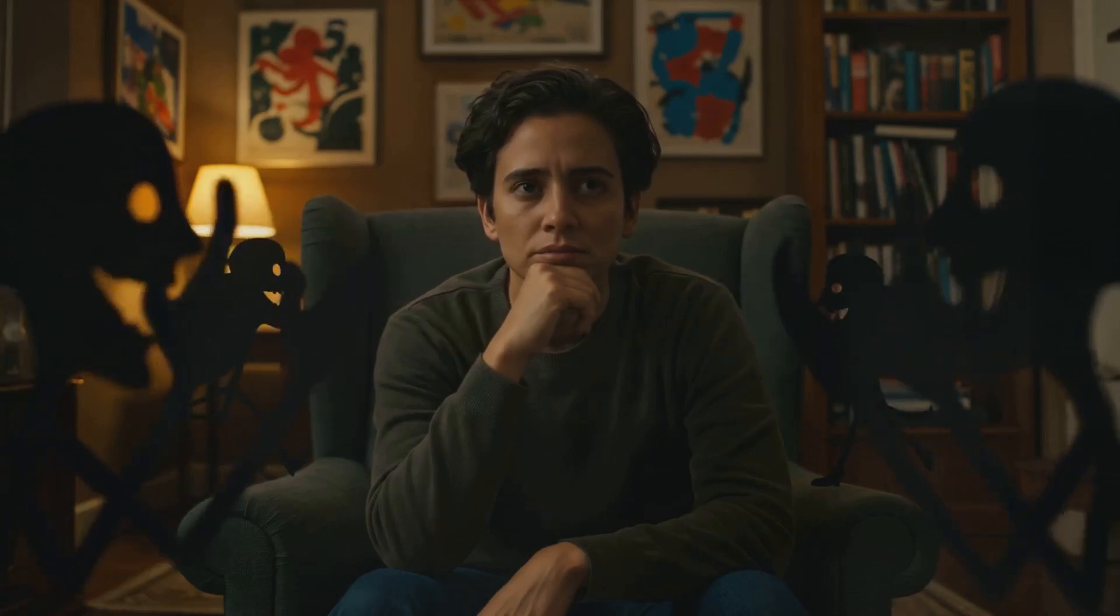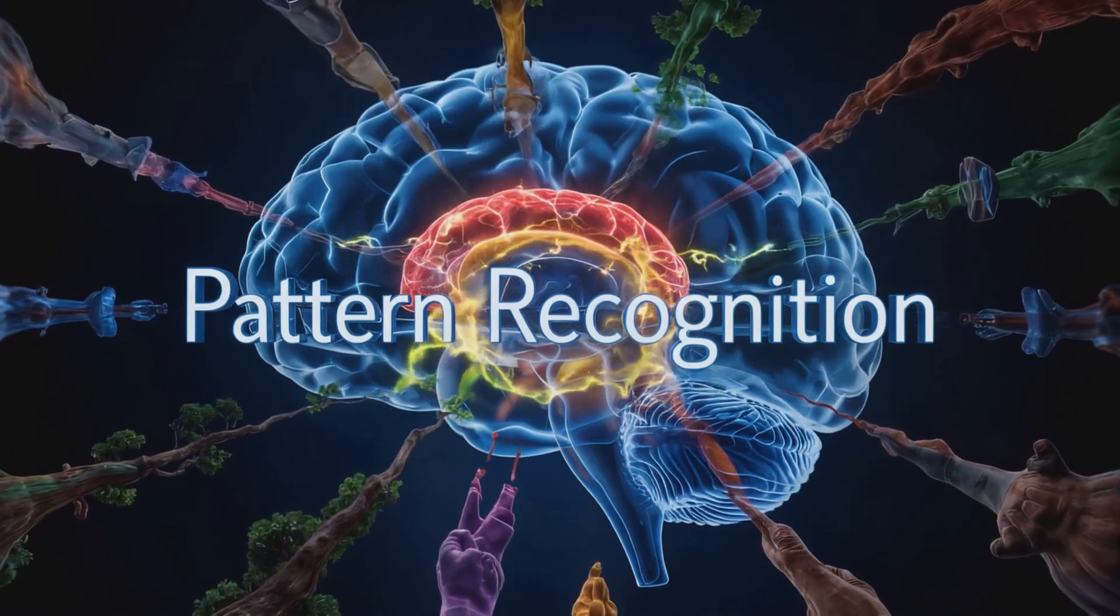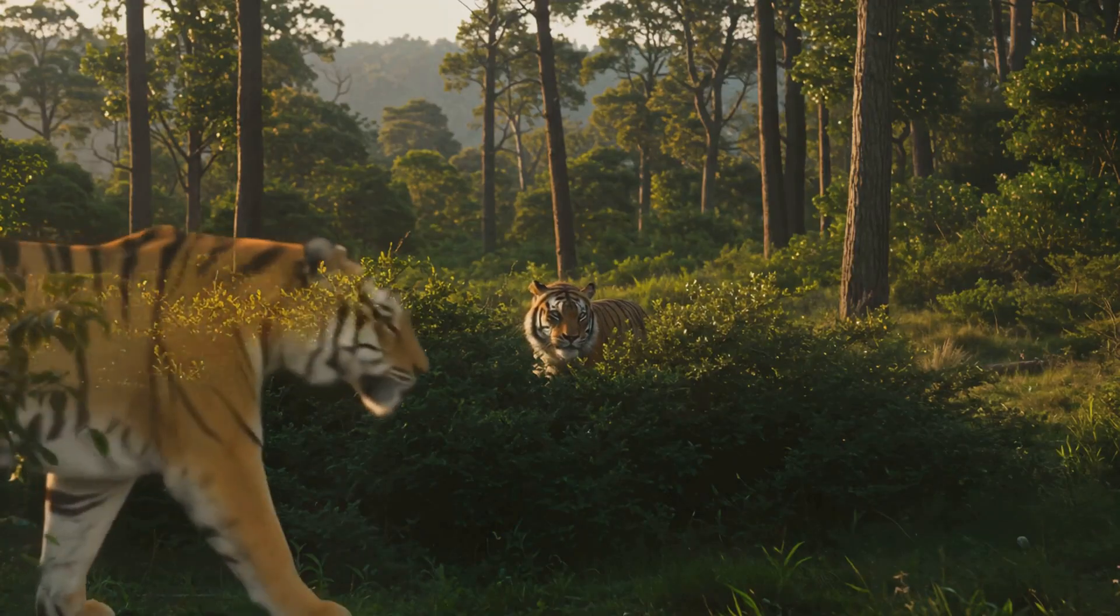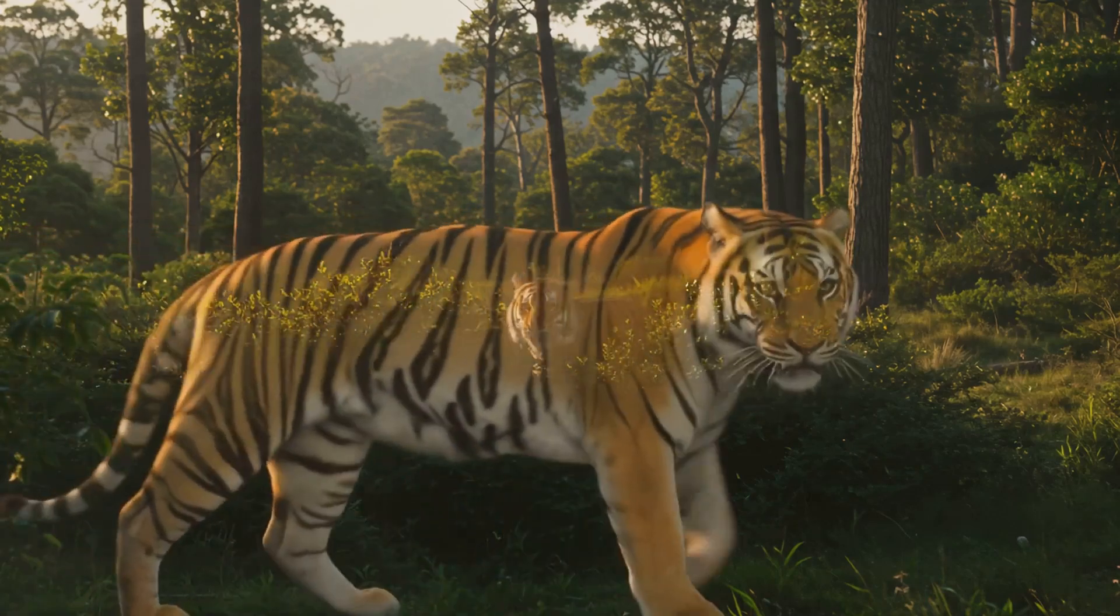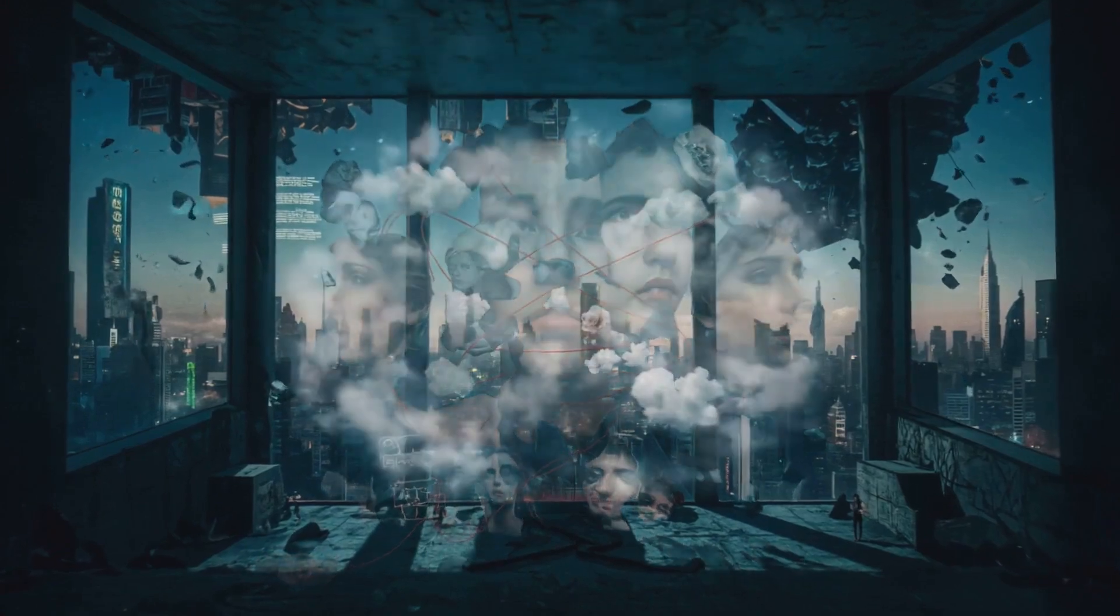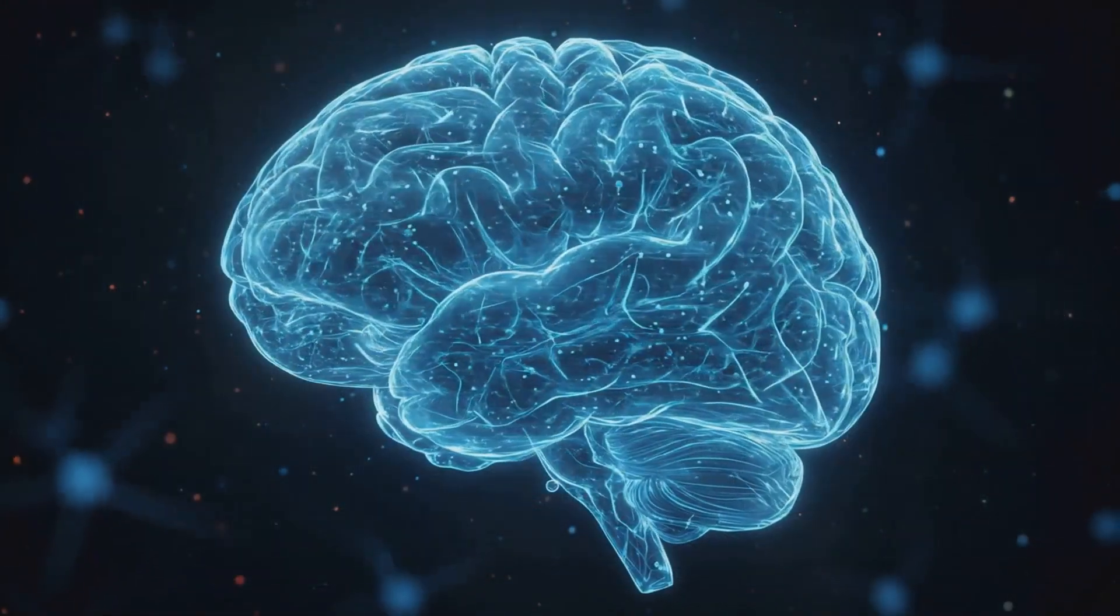Your brain evolved to detect patterns, to spot danger, to keep you alive. But that means it also sees things that aren't there. A rustle in the bushes could be wind, but your brain imagines a tiger. Today we're scared of things that don't exist. We see faces in clouds, we hear meaning in random noise.